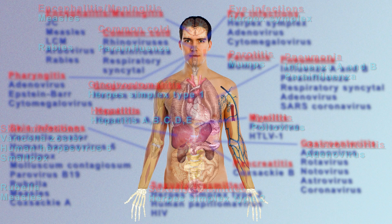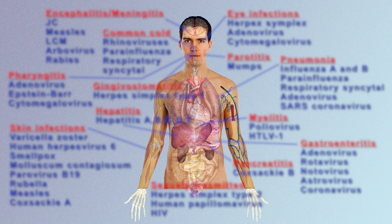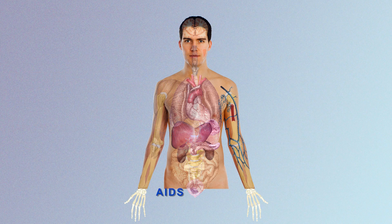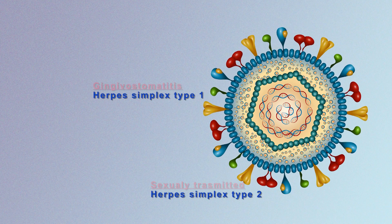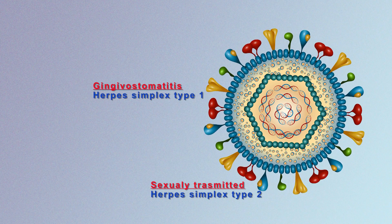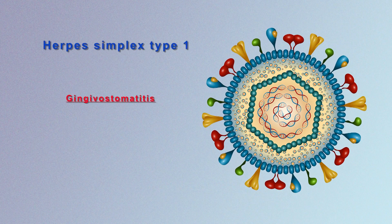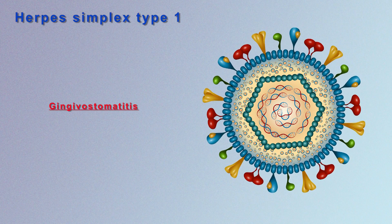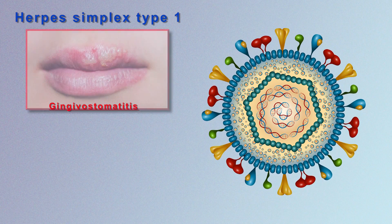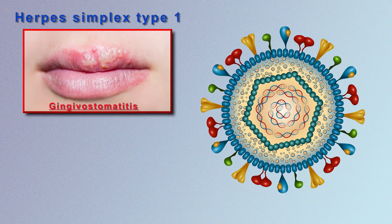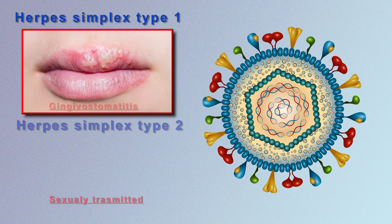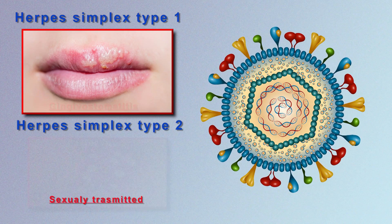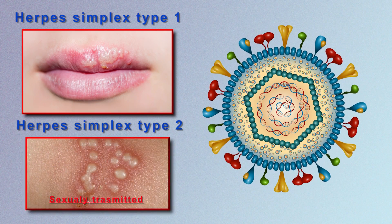But some of them are newcomers, like the AIDS virus, the HIV. And there are two main herpes simplex viruses: herpes simplex virus type 1, which causes cold sores on the lips, and herpes simplex type 2, which causes sexual disease transmitted during sexual intercourse.